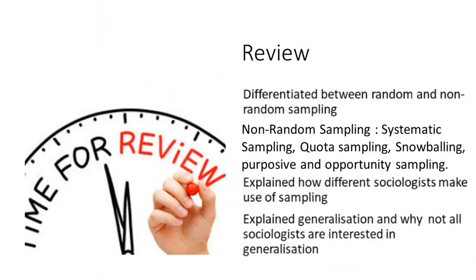Let us recap what we covered in this lesson and through the last three lessons. We differentiated between random and non-random sampling, and we looked at the different non-random sampling techniques: systematic sampling, quota sampling, snowballing, purposive and opportunity sampling. I explained how different sociologists make use of sampling, and I explained generalization and why not all sociologists are interested in generalization.